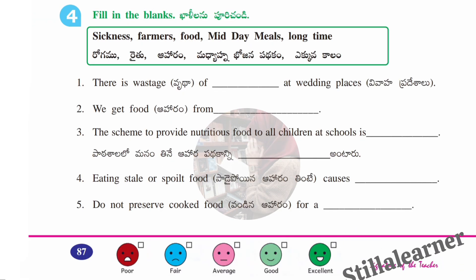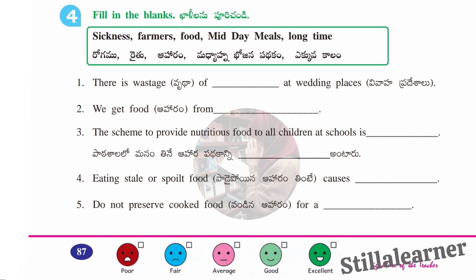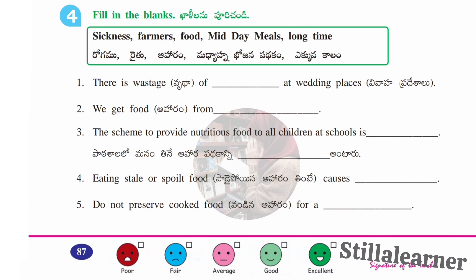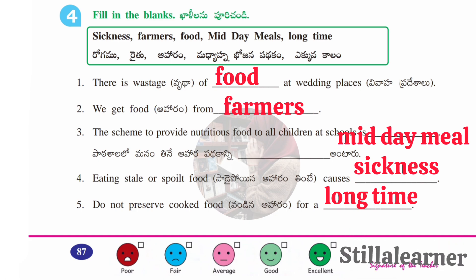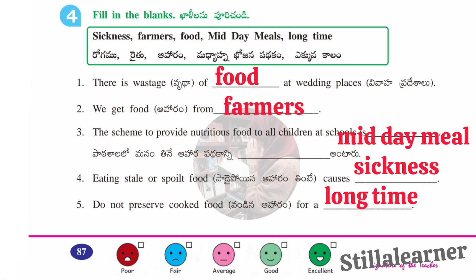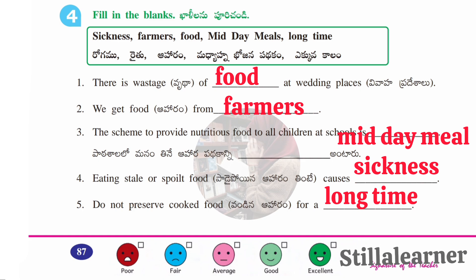The fourth section is fill in the blanks using the hint box. Answers: there is wastage of food at wedding places; we get food from farmers; the scheme to provide nutritious food to all children at school is midday meal; eating stale or spoiled food causes sickness; do not preserve cooked food for a long time.